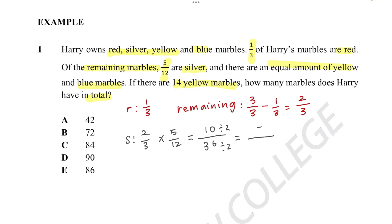And then we get 5 as a numerator and 18 as a denominator. So then the blue and yellow marbles would probably equal 18 out of 18 minus 1 out of 3 for the red, minus 5 out of 18. So firstly, we need to convert the 1 third. So that would be 18 out of 18, which is how many marbles Harry had in total.